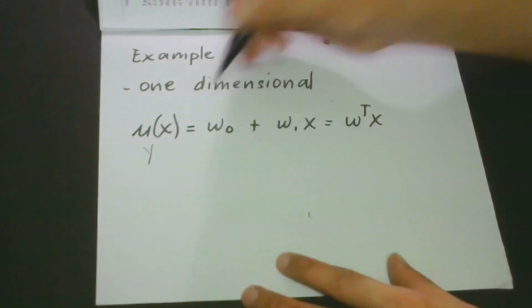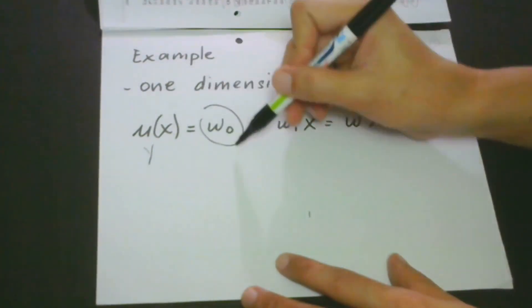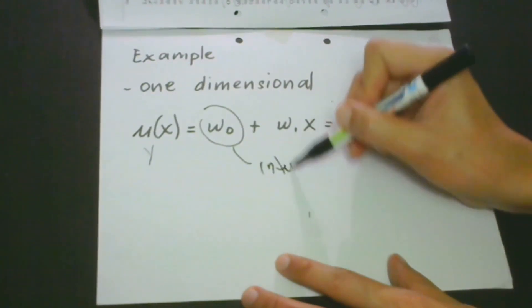So we have here mu(x) or sometimes this can be y which is equal to w0 plus w1 x which is equal to w^T x. Of course, we know that this w0 here is actually the intercept. Let me write here.